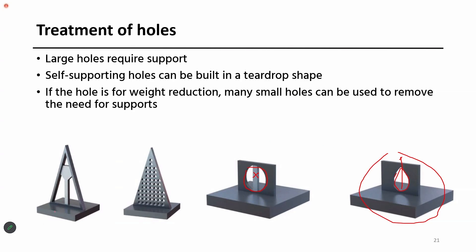The same thing applies to other features — the design is modified. If you have one design, it requires additional support structures, but if you can modify that CAD model, you can avoid the support structures. Similarly, we can see what is the minimum gap that can be achieved from the 3D printer — less than 2 mm gap between the supports is good and doesn't require any kind of support.